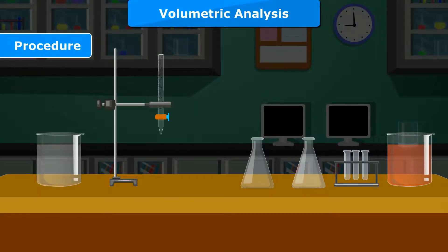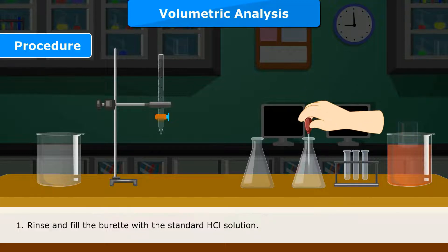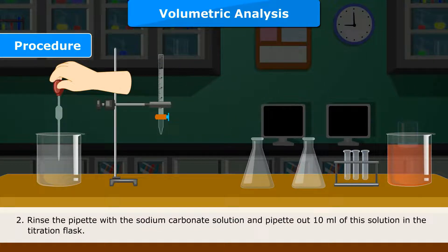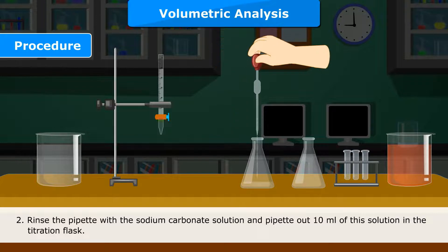Procedure: Rinse and fill the burette with the standard HCl solution. Rinse the pipette with the sodium carbonate solution and pipette out 10 ml of this solution in the titration flask.